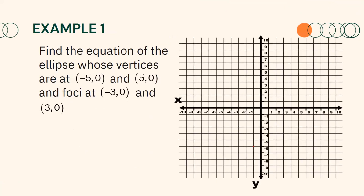We can plot our given on a Cartesian plane. From here, notice that our vertices, which are (−5, 0) and (5, 0), form the major axis to be a horizontal line. Since the major axis of our ellipse is a horizontal line, it follows that our ellipse is horizontally oriented.